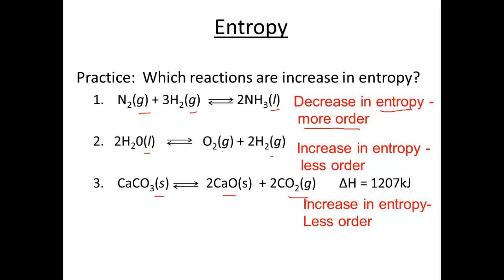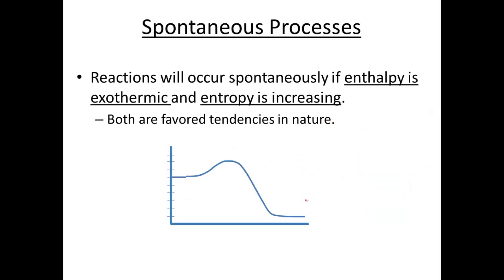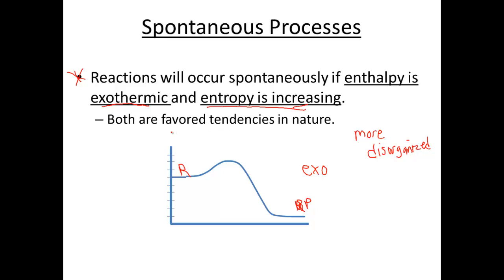In each of these, we're looking at how organized the products are. A spontaneous process: reactions will occur spontaneously if enthalpy is exothermic — you're losing energy — and your entropy or disorganization is increasing. Both of these are favored tendencies in nature. If going from reactants to products we have exothermic enthalpy and increasing entropy, more disorganized, this will be a favored reaction in nature. And that will conclude our section.